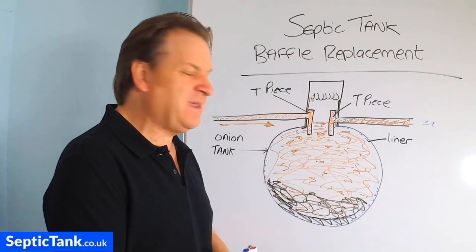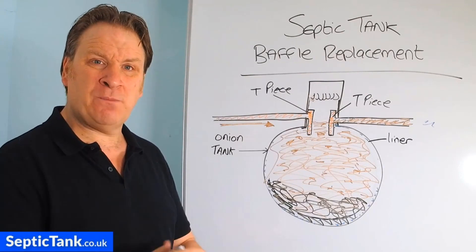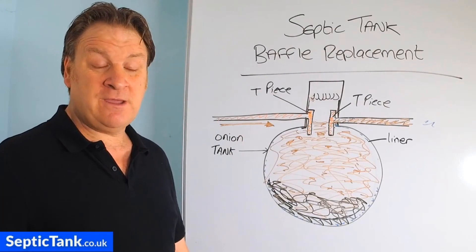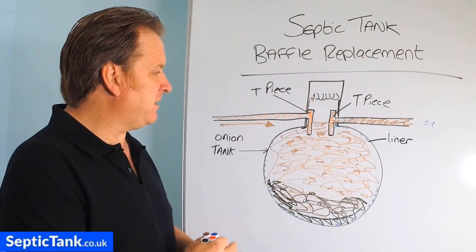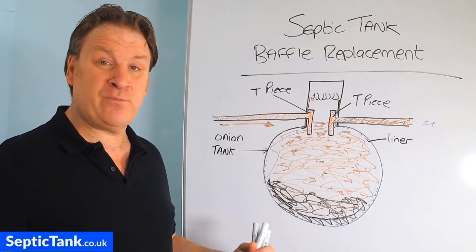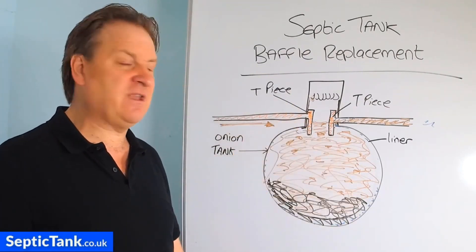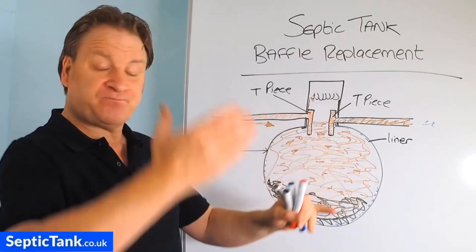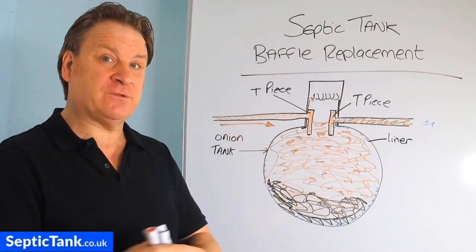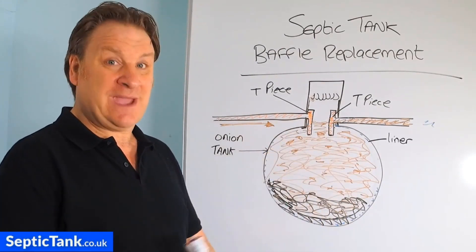You pay for what you get. Onion tanks are good tanks but they're cheap for a reason — they do the job but they don't last very long, in my opinion, from my experience of all the repairs and replacements I've had to do. Personally I'd go for a low-profile, bullet-shaped septic tank any day. They haven't got any liners — they've actually got partitions and compartments which are proper baffles, unlike the liners which can go wrong as you've seen.